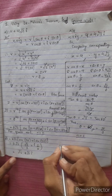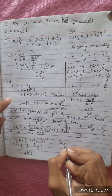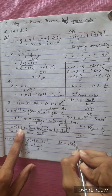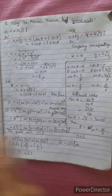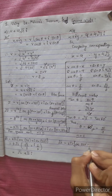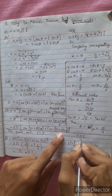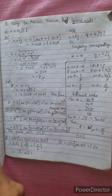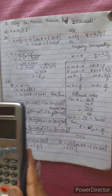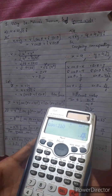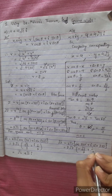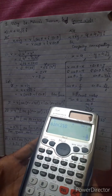For n equals 1: z square root with cos(30 plus 180 times 1) plus i sin(180 plus 30). We have 210 degrees. So 2 root 2 cos 210, which is minus root 3 by 2, plus i sin 210, which is minus 1 by 2.